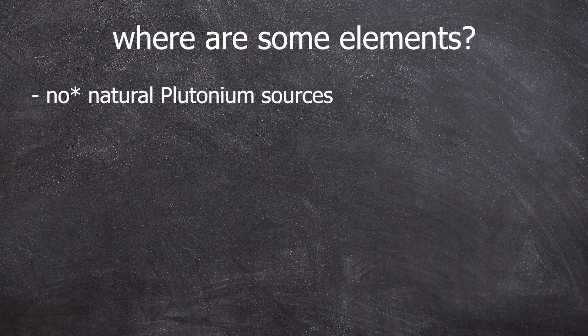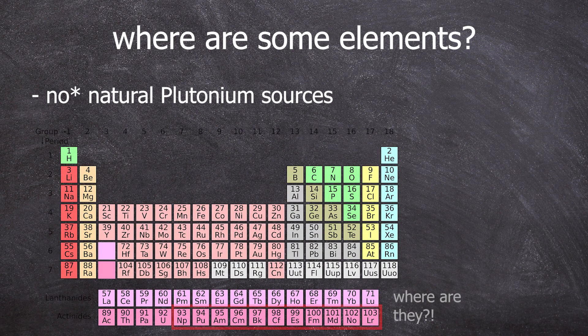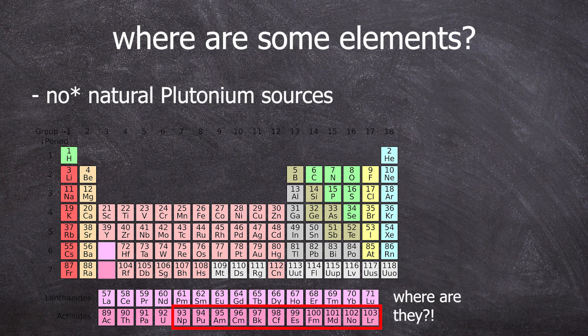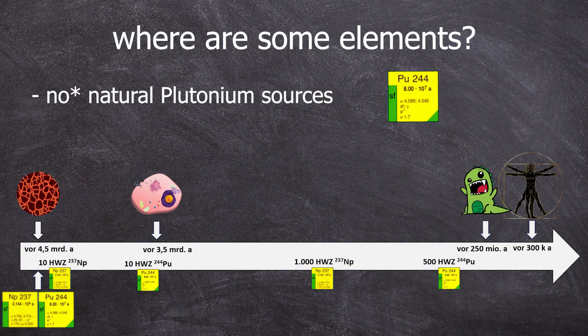Consequently, there is no natural source of plutonium today. Even if it was present at the time of Earth's formation, with a half-life of 80 million years, no plutonium-244 atoms survived the 4.5 billion years it took for humans to exist and search for such atoms.